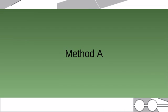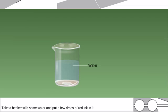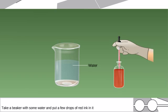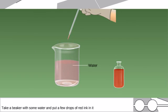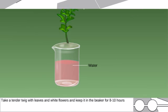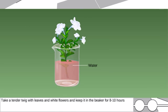Method A: Take a beaker with some water and put a few drops of red ink in it. Take a tender twig with leaves and white flowers and keep it in the beaker for 8 to 10 hours.